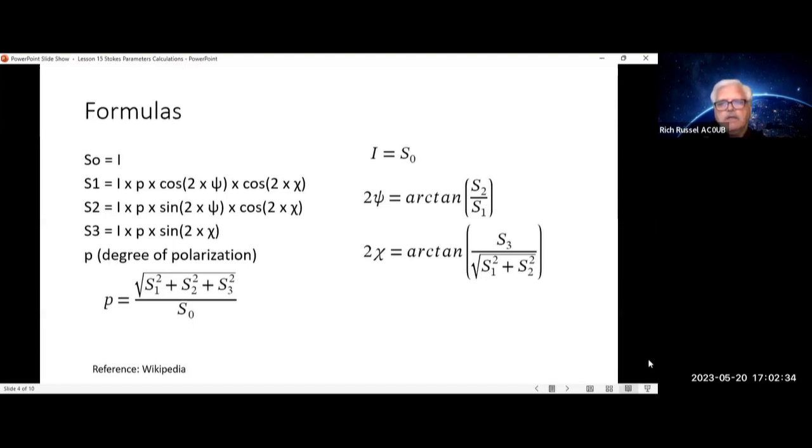And on the other side, you have 2-psi equals arctan of S2 over S1. And 2-chi equals arctan of S3 over the square root of S1 squared plus S2 squared.